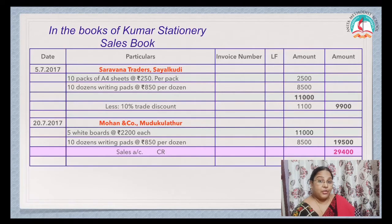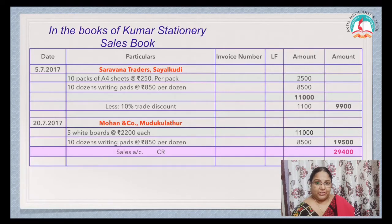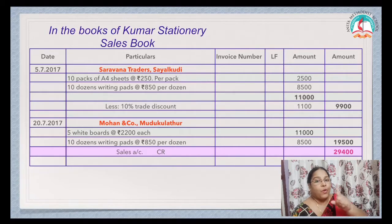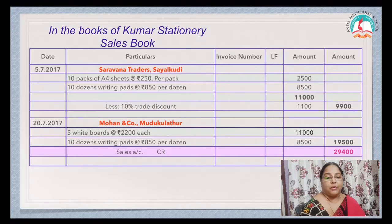What is most important? The format is very important, children. Heading: In the books of Kumar Stationery — Sales Book. It is not an account, it is a book, so only one side of your notebook has to be used. Columns: Date, Particulars, Invoice Number, LF, Amount, and Amount.